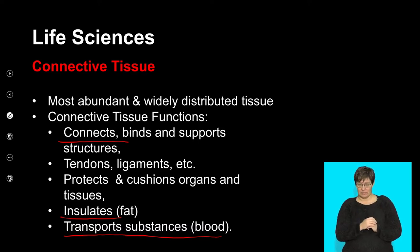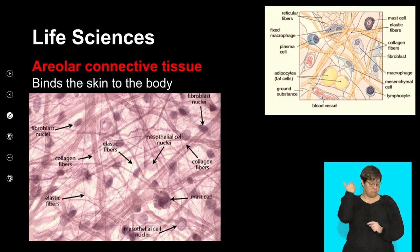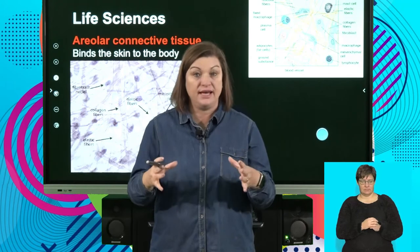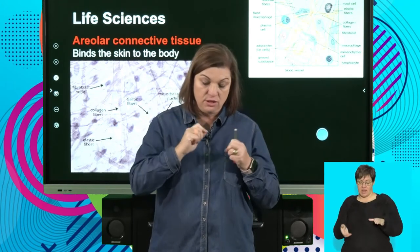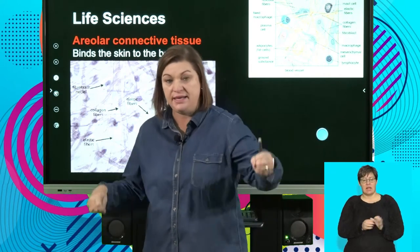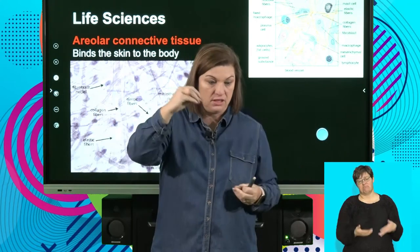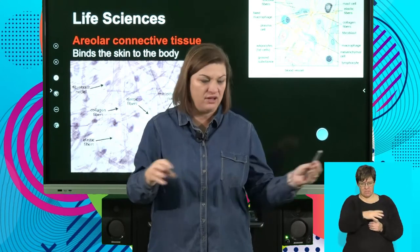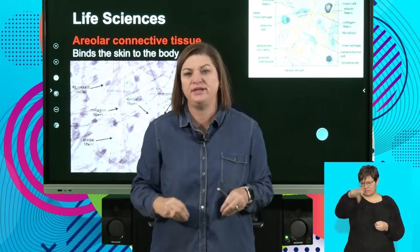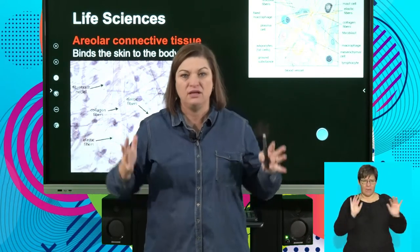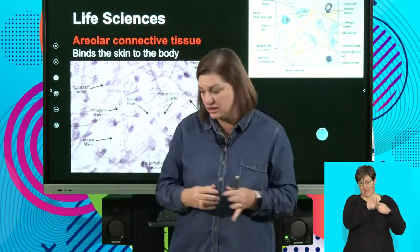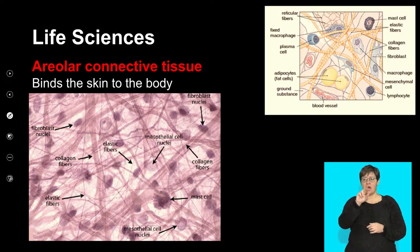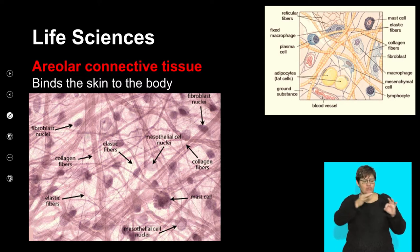For the first connective tissue, imagine a container with water or jelly as the matrix, then add string, elastic bands, and some cells dropped in. You've got no pattern whatsoever. This tissue is called areolar connective tissue. The jelly is the matrix, the strings are tough collagen fibers, the elastic bands are elastic fibers that can stretch and return, and the various objects dropped in represent different types of cells.